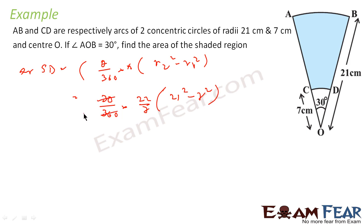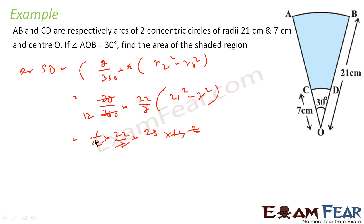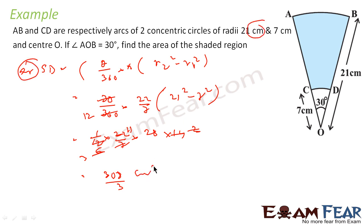So 30/360 simplifies to 1/12. We then apply the identity a² − b² = (a+b)(a−b). So 21 + 7 = 28 and 21 − 7 = 14. After cancellation, this gives 308/3. Since we are talking about area in centimeters, the answer is 308/3 centimeter square. Very simple.